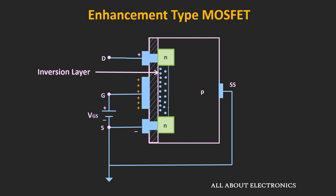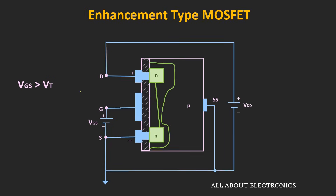Along with this channel there will also be a depletion layer around it, because there are two PN junctions which are reverse biased. The first PN junction is formed between the drain and the substrate, and the second PN junction is formed between the substrate and the source terminal. Both PN junctions are reverse biased. Now we will consider that Vgs is already greater than the threshold voltage and see what happens when we apply Vds.